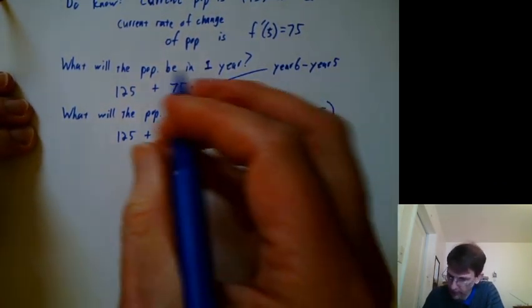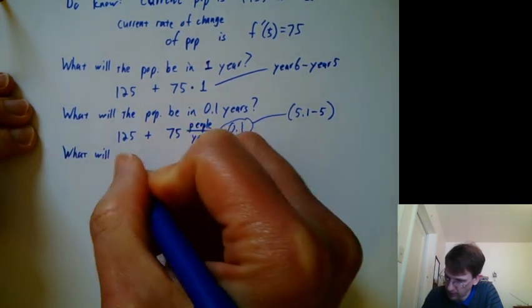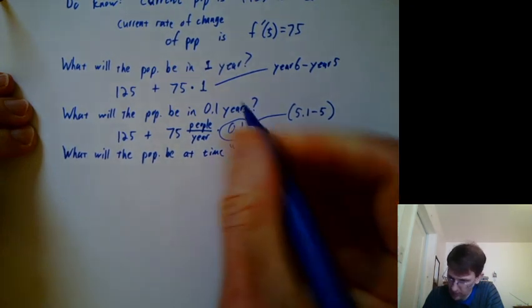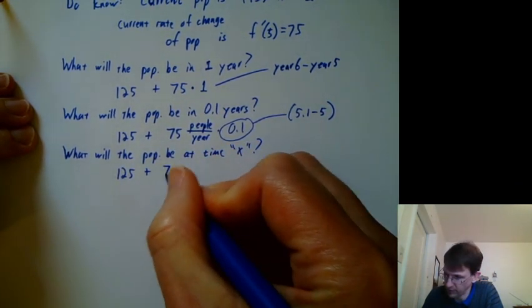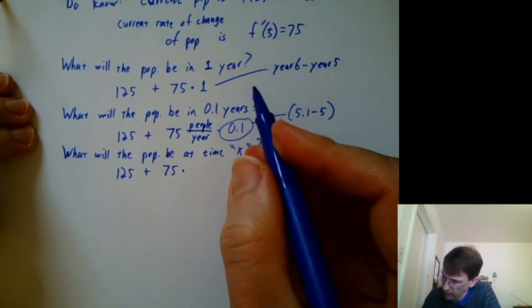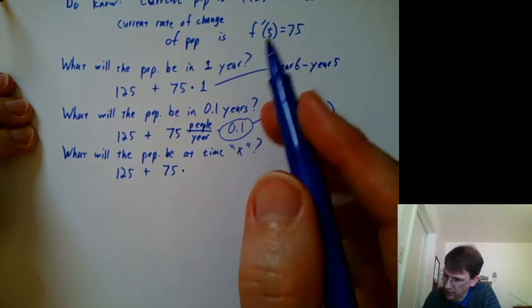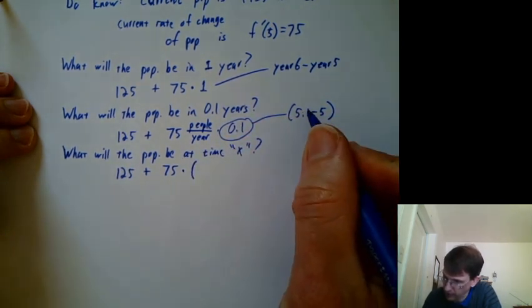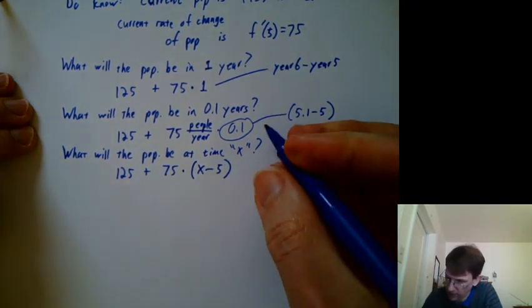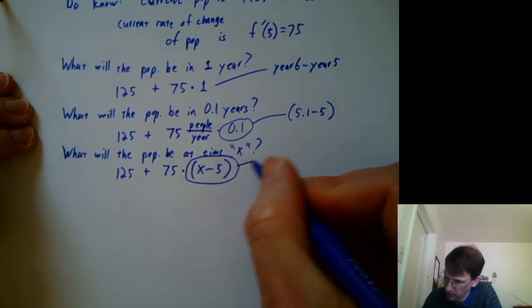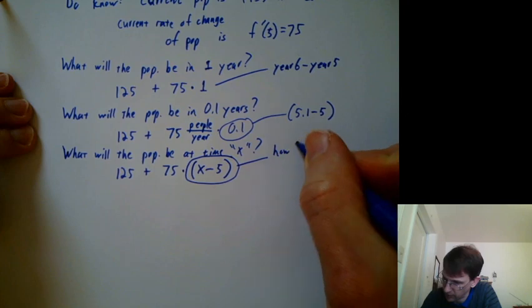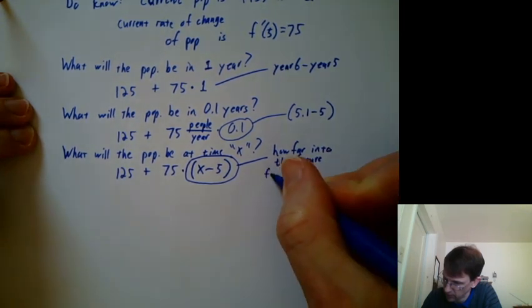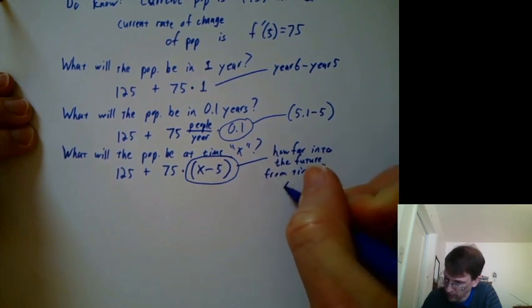What will the population be at time x? Well, we'll follow the same pattern. 125 plus 75 times. Now, here's where it gets tricky. This one year was the duration between now time 5 and time 6 or between time 5 and time 5.1. So generally, I'm just going to put an x here minus the 5. So this value is how far into the future we're going from 5. You could also call it delta x.